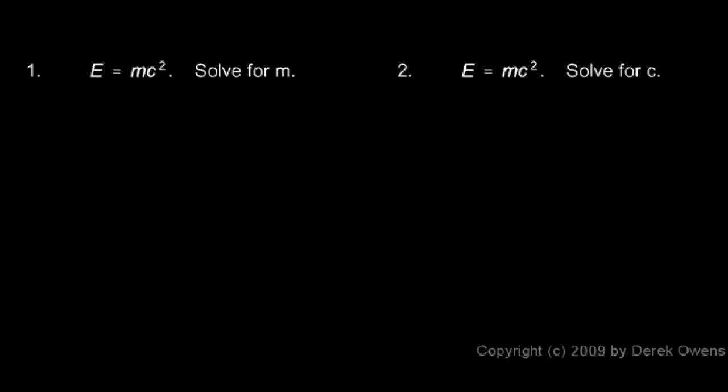Now we're told to do a little bit of algebraic manipulation on these equations. We're told to take E equals MC squared and solve it for M. That's pretty easy to do. E equals MC squared. To solve for M, we just divide each side by C squared. The C squareds cancel on the left and the right, and we're left with M equals E over C squared.